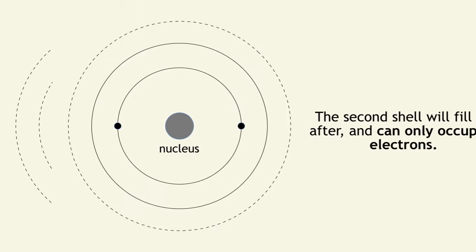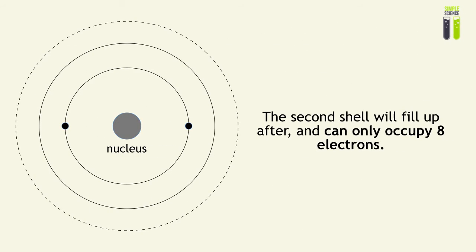And then we must fill up the second shell after and this shell can fill up to eight electrons. So we will fill these right after. That is basically a full second shell.